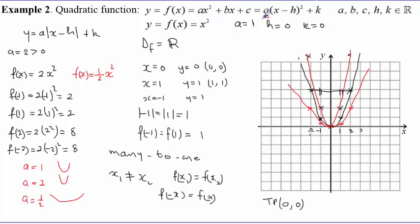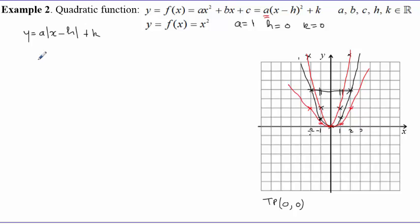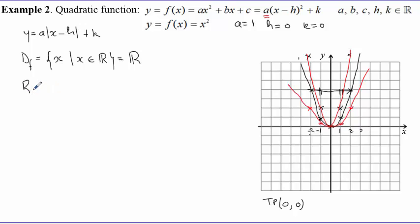Now let's set a = 1 and monitor the effect of h, then later move to k. The domain of f(x) = x² is the set of real numbers. The range: this parabola has its lowest point at 0, then increases going up, so the range is y such that y ≥ 0. The domain is the reals and the range is the half-line starting from 0 going upwards.